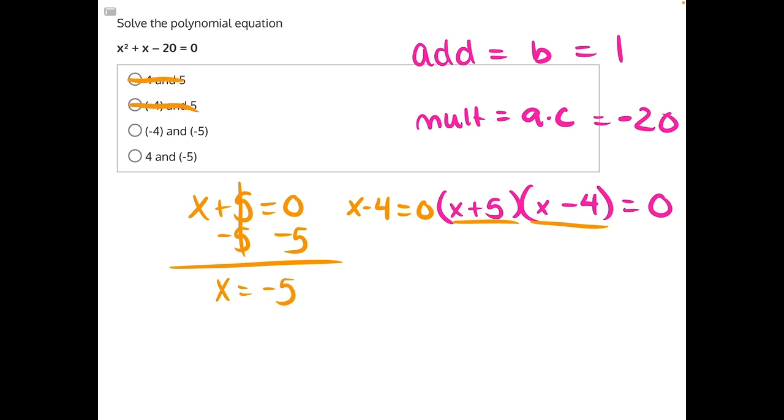For the next one, 4 is being subtracted from x, so the opposite operation is adding 4 to both sides. These 4s will cancel, giving us x is equal to 4, making answer choice D our correct answer.